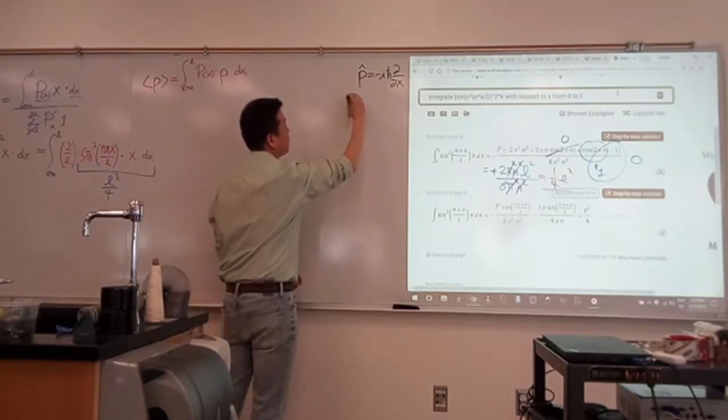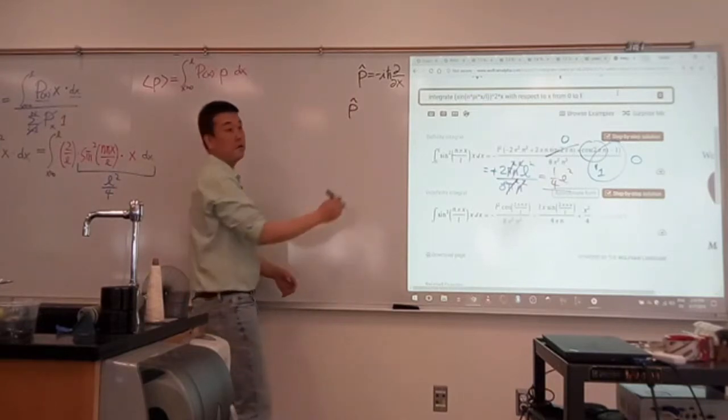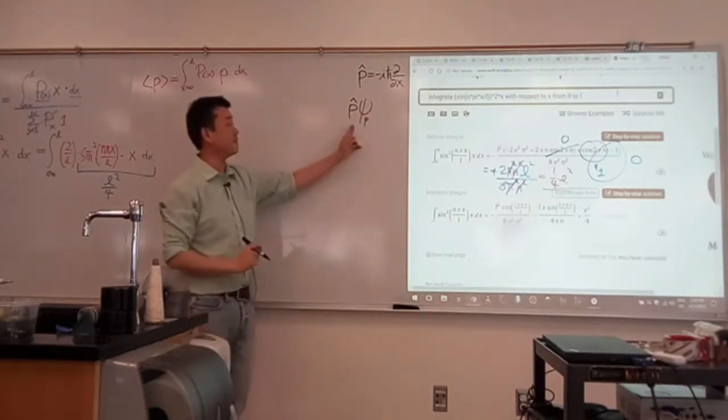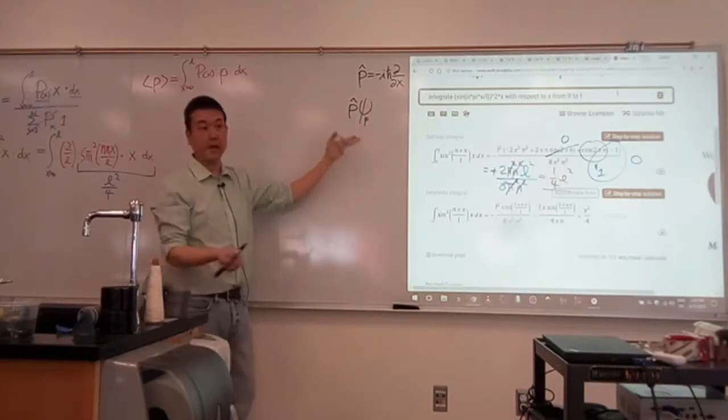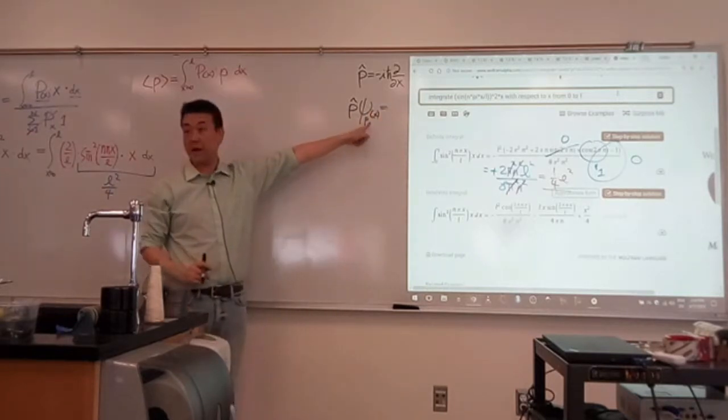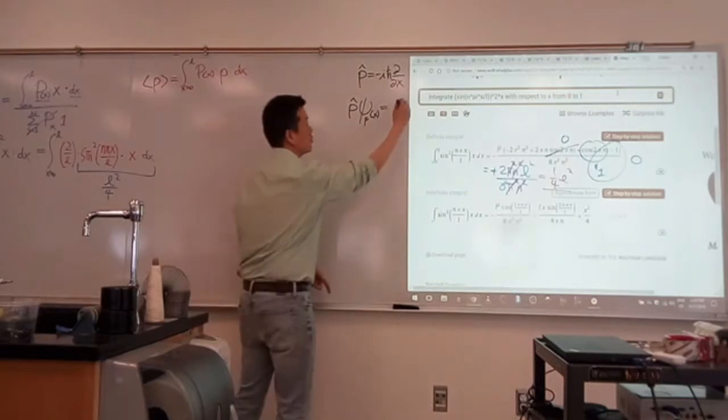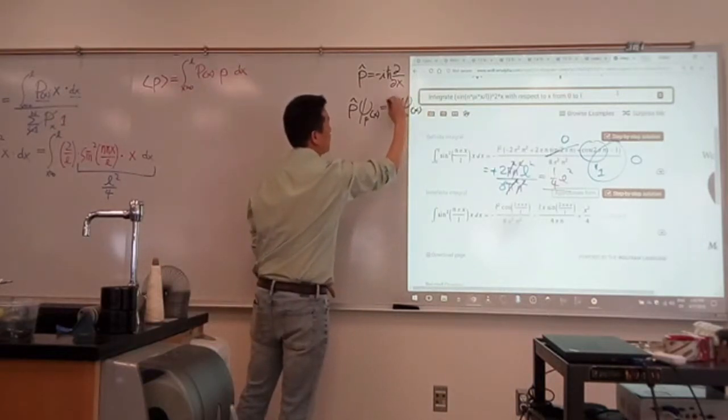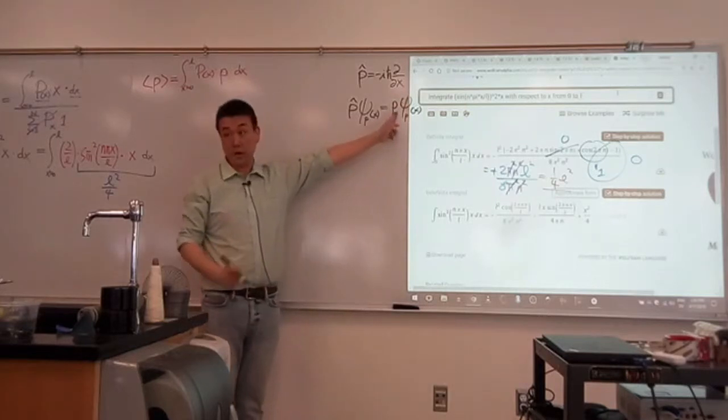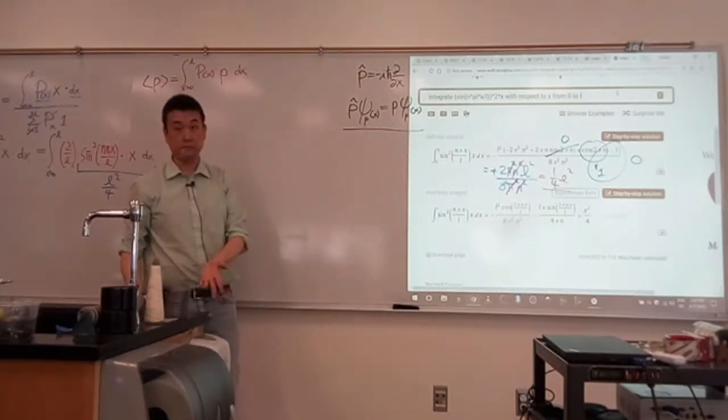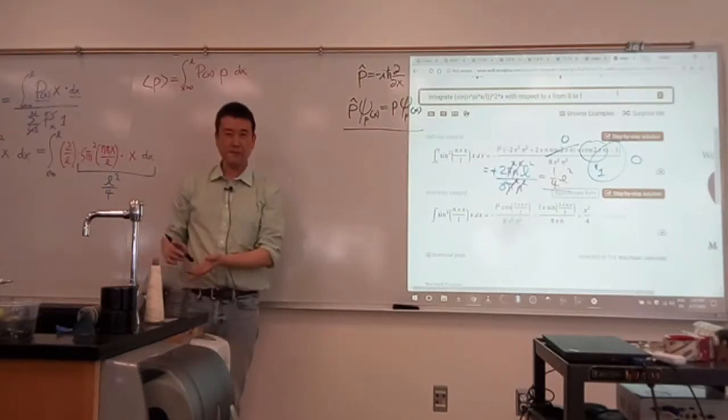We would say apply momentum operator to some momentum eigenfunction in the position representation. Then, if it's a momentum eigenfunction, then you should get the same function back, and then you would have momentum as a number in front of the function. Is that ringing a bell?